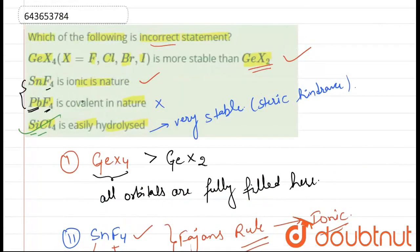So it is asking in the question, which of the following is not correct? So correct option for this question, it should be option C. PbF4 is covalent in nature. Thank you.